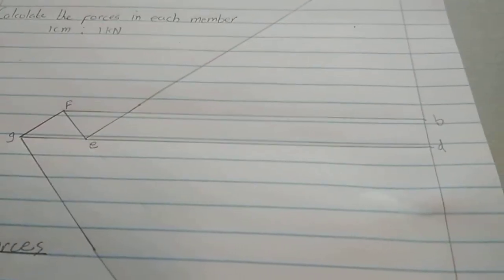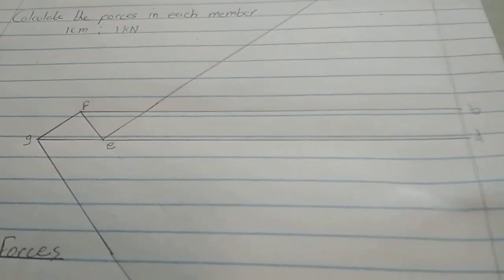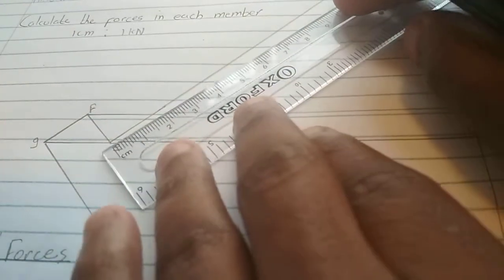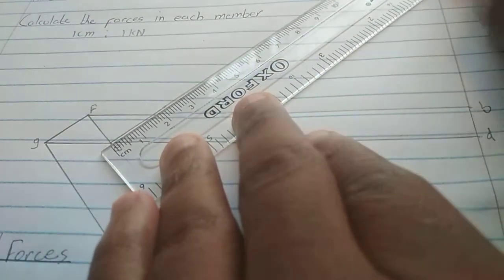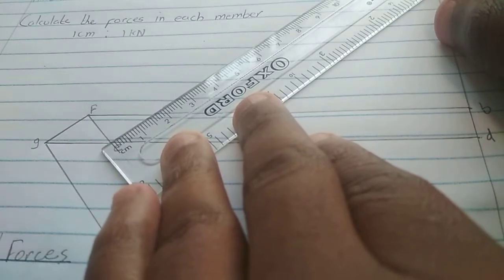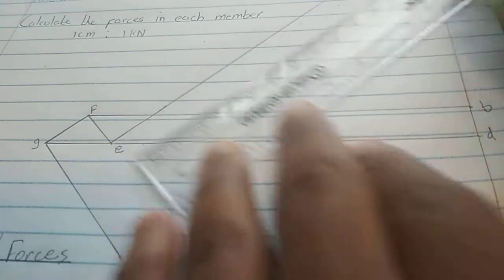So in measuring that, we're just going to simply put our ruler there, measure that distance. And it gives me about 15, 16. Let's say 16.